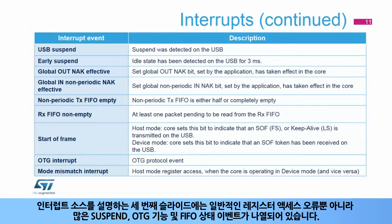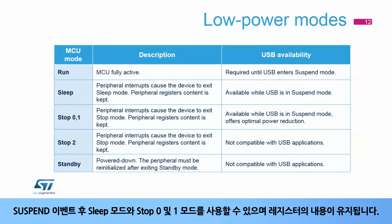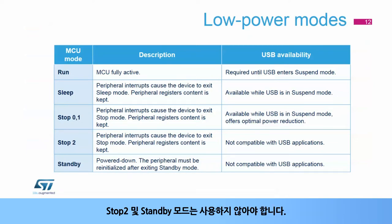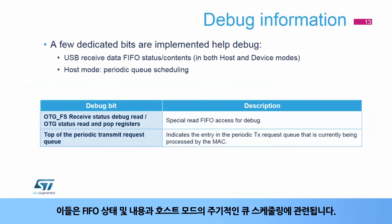The USB peripheral is fully active in run mode. After a suspend event, sleep mode and stop 0 and 1 modes are available and the contents of its registers are kept. Stop 2 and standby modes should not be used. Within the USB mode, dedicated bits are implemented to provide some debug functions for USB applications, relating to FIFO status and contents and the scheduling of periodic queues in host mode.